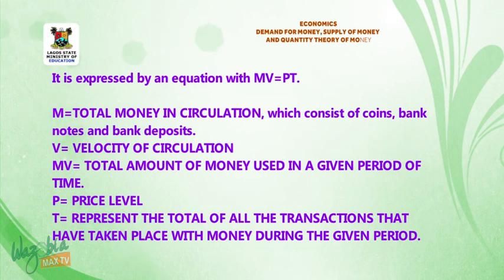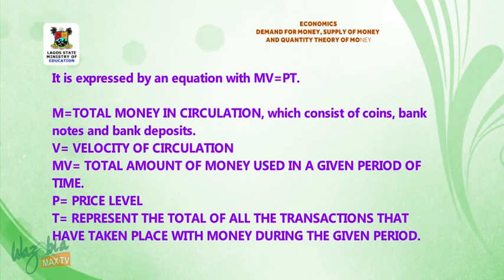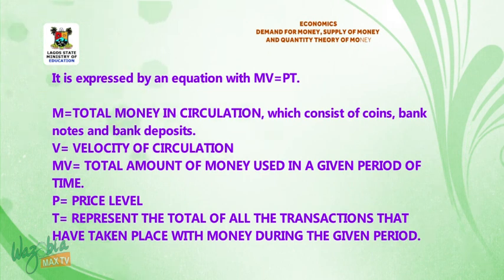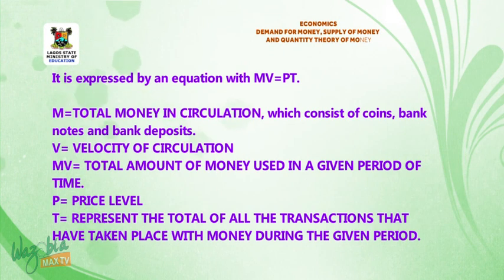V is the velocity of circulation. MV represents the total amount of money used in a given period of time. P is the price level. T represents the total of all the transactions that have taken place with money during the given period.